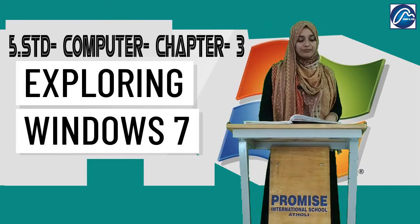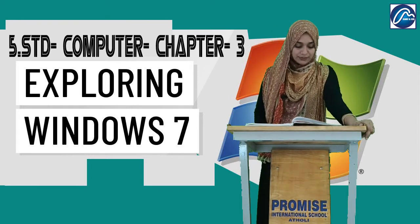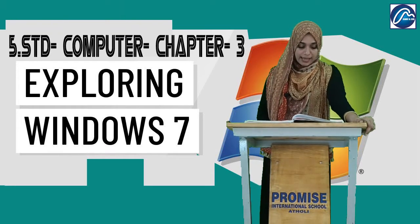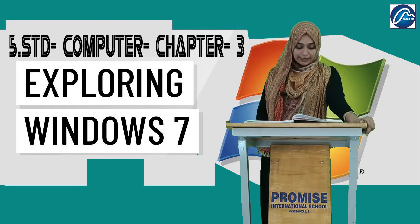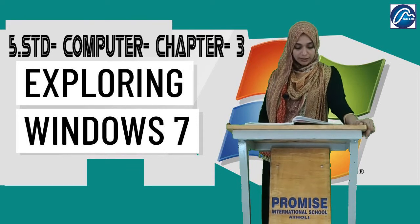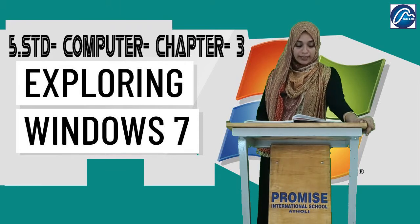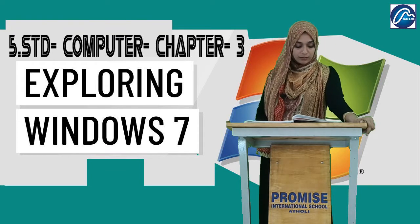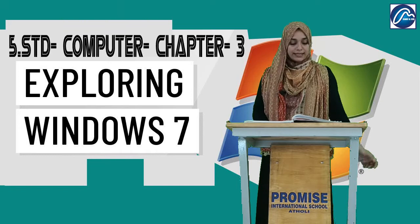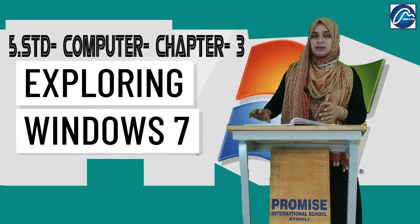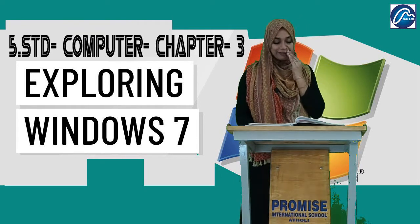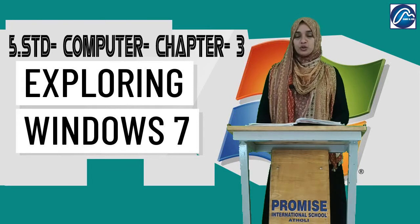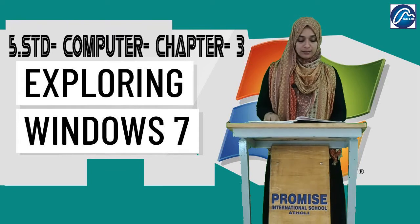Next, how we can restore files and folders. For restoring files and folders, double-click the Recycle Bin on the desktop. In the Recycle Bin window, click on the file or folder you want to restore, then click on Restore This Item on the toolbar. The steps are: first double-click the Recycle Bin, then select the file you want to restore, and click on Restore This Item on the toolbar.